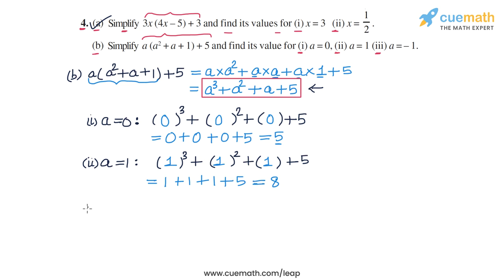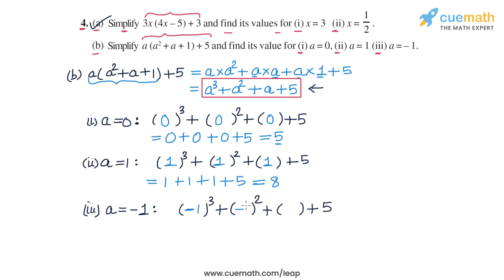For a equal to minus 1, substituting into a cubed plus a squared plus a plus 5, we get minus 1 cubed plus minus 1 squared plus minus 1 plus 5. That is minus 1 plus 1 plus minus 1 plus 5. The minus 1 and plus 1 cancel out, leaving minus 1 plus 5, which equals 4. So for a equal to minus 1, the expression's value is 4.